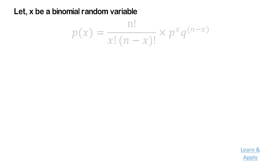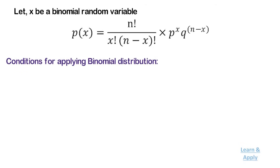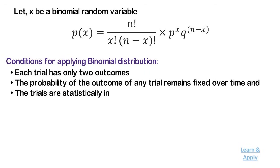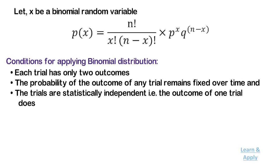Let x be a binomial random variable. Then its probability mass function is: P(x) = n! × p^x × q^(n−x) / (x! × (n−x)!). Important Conditions for Applying Binomial Distribution: each trial has only two outcomes; the probability of outcome of any trial remains fixed over time; and the trials are statistically independent — that is, the outcome of one trial does not influence the outcome of others.